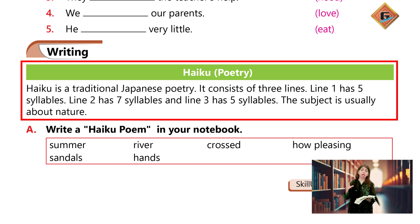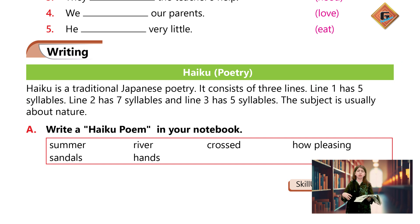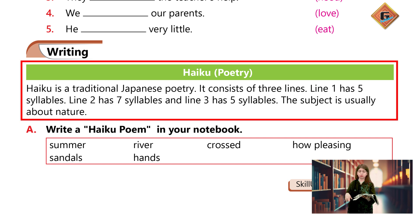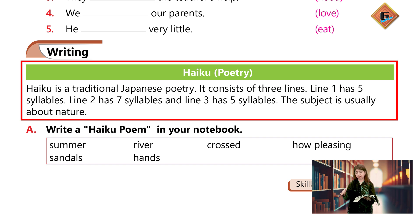Aur third line mein aap ke paas again five syllables hone chahiye. To basically isko aap five-seven-five poem bhi kehte ho. Haiku poems hamesha nature ke baare mein hoti hain — jaise ki river ke baare mein, moon ke baare mein, sun ke baare mein, mountains ke baare mein. Yeh hamesha nature specific hi hoti hain. To basically yahan ek poem likhne ki koshish ki hai jo river ke baare mein hai. Aap isme seasons ke baare mein bhi likh sakte ho — summer, winter, autumn, koi bhi.